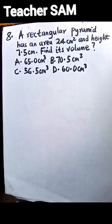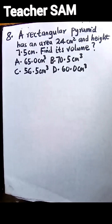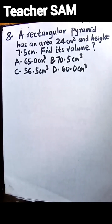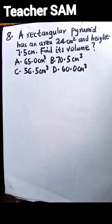We have yet another question before us. A rectangular pyramid has an area of 24 cm squared and a height of 7.5 cm. Find its volume.